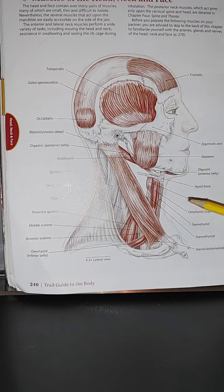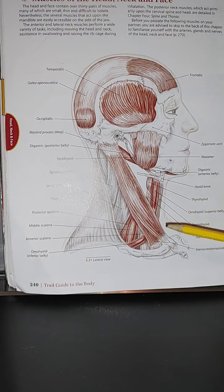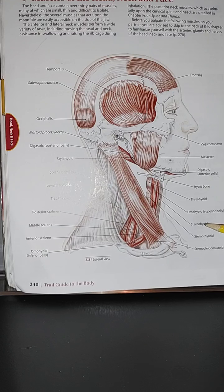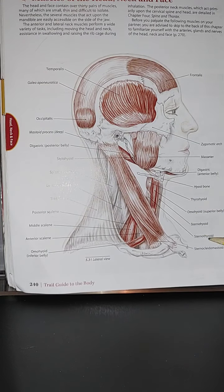On the lower portion, we have the thyrohyoid. And we have the omohyoid superior belly. Again, this is the lateral view. I'm going to show you the other view. And we have the sternohyoid and the sternothyroid.